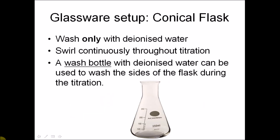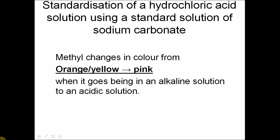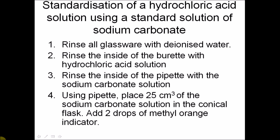For the conical flask, you only wash it with deionized water. For the titration, you'll need all the glassware mentioned, a retort stand, funnel, methyl orange indicator, hydrochloric acid, and the standard solution from the last experiment. In this experiment, the colour change is from orange to pink. So the method is: set up all the glassware and pipette 25 cm³ of sodium carbonate solution into the conical flask, then add 2 drops of methyl orange indicator.